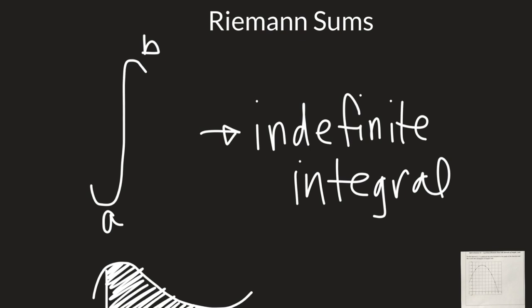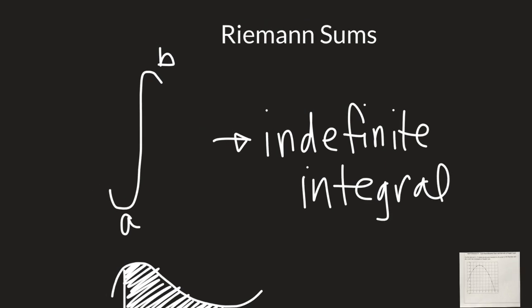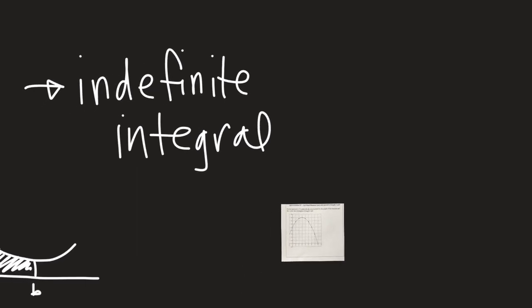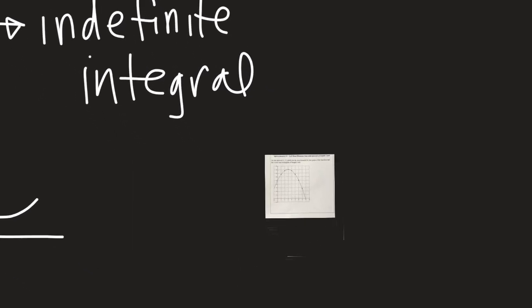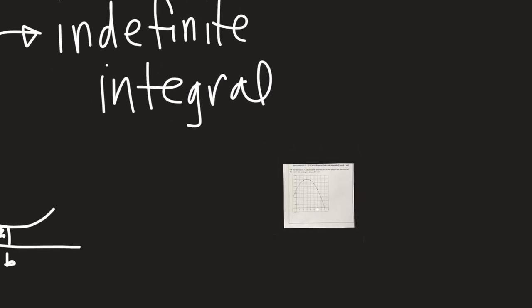For example, given a velocity function, we can figure out how far a car has gone by calculating that area. But today we're just going to ease into it and do some nice simple calculations using rectangles. Let me pull up this piece of notes paper and make it larger for us.